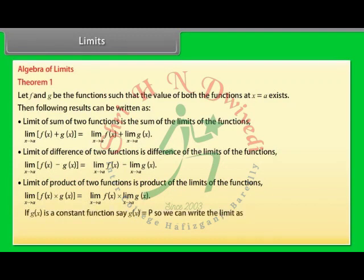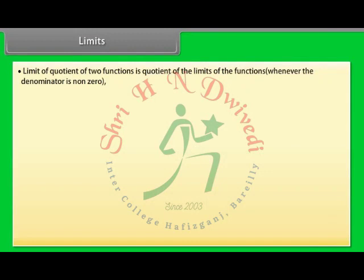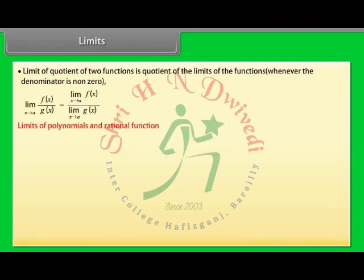If g(x) is a constant function, say g(x) = p, we can write the limit as: limit x→a of p·f(x) = p × limit x→a of f(x). The limit of the quotient of two functions is the quotient of the limits, whenever the denominator is non-zero: limit x→a of f(x)/g(x) = limit x→a of f(x) divided by limit x→a of g(x).